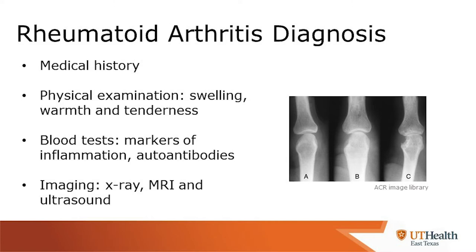We can diagnose RA based on the patient's history and physical exam findings, which oftentimes show swelling, warmth, and tenderness. There are certain blood tests that tell us about inflammation in the body, and we can also look at certain autoantibodies associated with rheumatoid arthritis. Imaging such as x-rays, MRIs, and ultrasounds are also very helpful. The hallmark x-ray finding of RA is erosion, indicating that significant inflammation is actually eroding the bone.